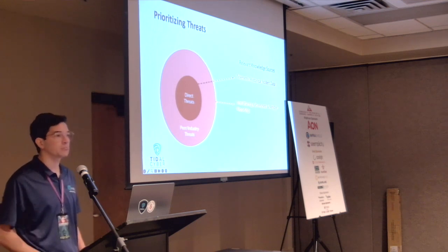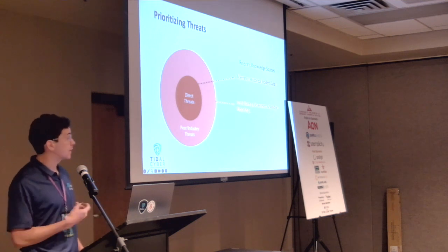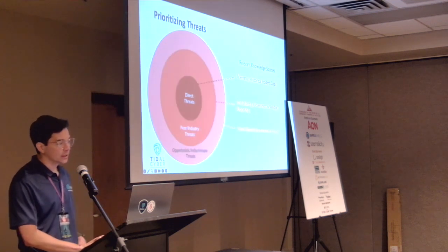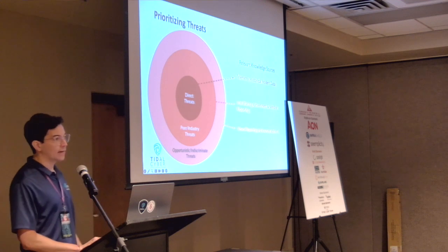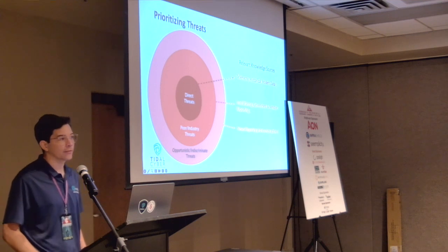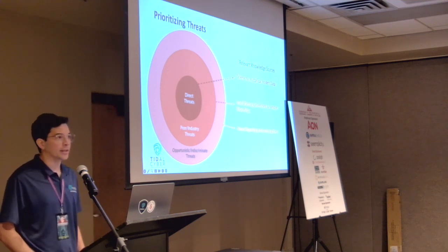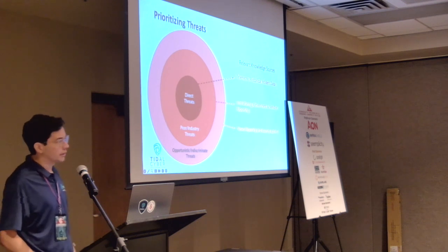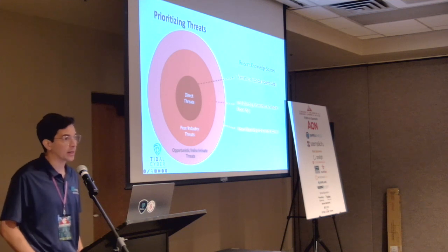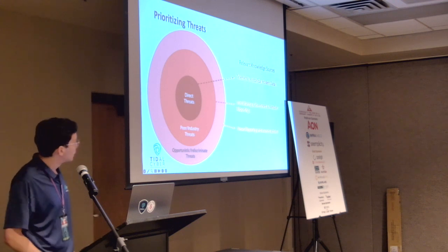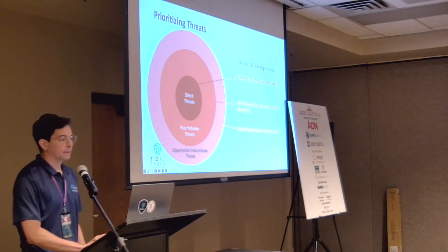If a peer tells you they saw a specific threat, ask yourself: what would happen if that threat got into my environment? Lastly, there's the opportunistic threat. A classic example is news reporting, or maybe you have a vulnerability open and you're looking for which groups are actively exploiting it. Opportunistic threats might not be targeting you specifically — they might just be scanning the entire internet to see what they can get into.